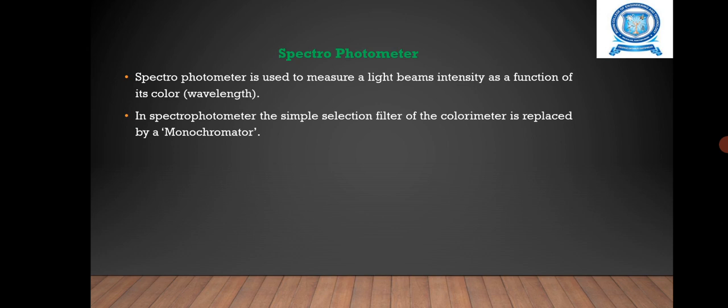Last one is spectrophotometer. It is used to measure light beam intensity as a function of its color. It allows the determination and observation of samples at various wavelengths. In spectrophotometer, the simple selection filter of the colorimeter is replaced by a monochromator.